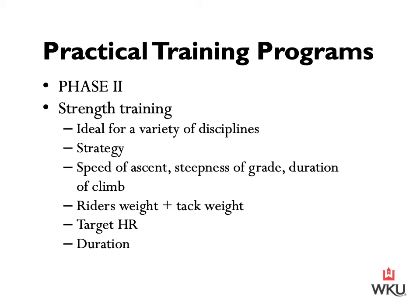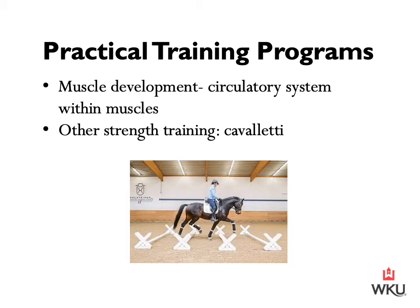The ultimate goal of phase two strength training is muscle development, including development of the circulatory system within the muscles. If hill work is not available at your training facility, use of cavaletti poles is another option. Cavaletti can elevate the horse's movement and to a certain extent replicate the work done on hills, making them a viable alternative for strength training.